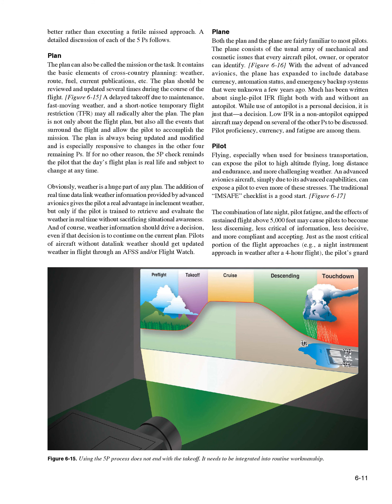The 5P check reminds the pilot that the day's flight plan is real life and subject to change at any time. Weather is a huge part of any plan. The addition of real-time data link weather information provided by advanced avionics gives the pilot a real advantage in inclement weather, but only if the pilot is trained to retrieve and evaluate the weather in real time without sacrificing situational awareness. Weather information should drive a decision, even if that decision is to continue on the current plan. Pilots of aircraft without data link weather should get updated weather in flight through an AFSS and/or flight watch.